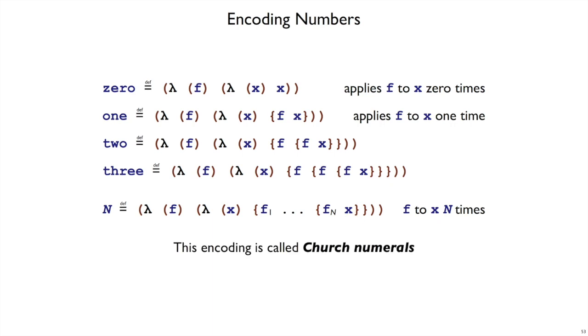This particular encoding is called Church Numerals, because it's by Alonzo Church, the guy who first started investigating the lambda calculus. And again, this will be a good encoding as long as we can compute with it, as long as we can add numbers or subtract 1 from a number and so on.